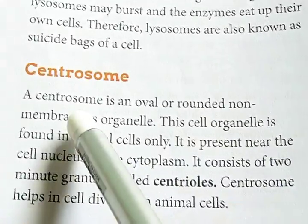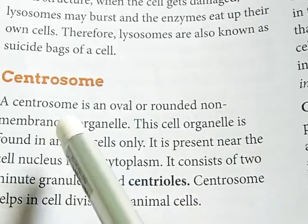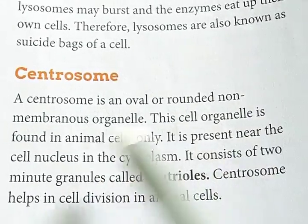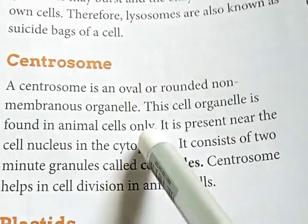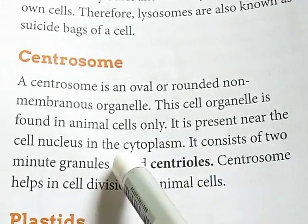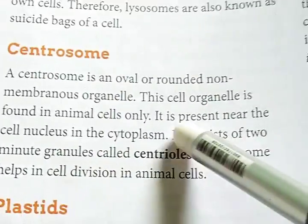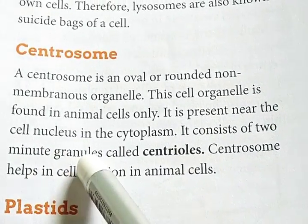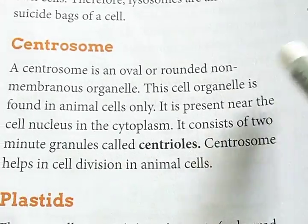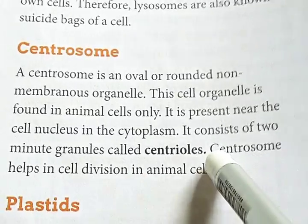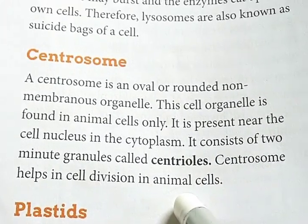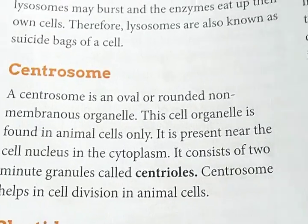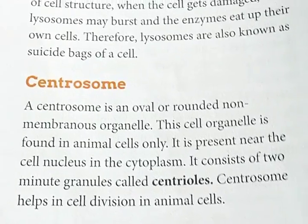The last one is centrosome. A centrosome is an oval, round, non-membranous organelle — centrosome has no membrane. This cell organelle is found in animal cells only; it is absent in plant cells. It is present near the cell nucleus in the cytoplasm. It consists of two minute granules called centrioles. Centrosome helps in cell division in animal cells.